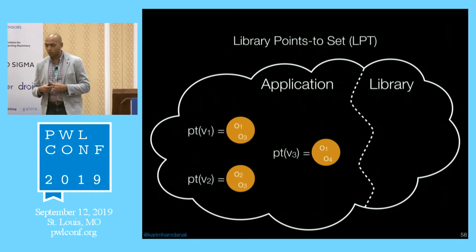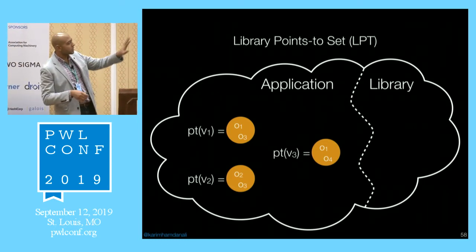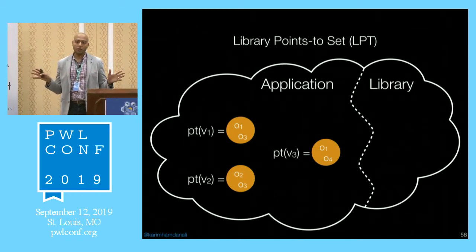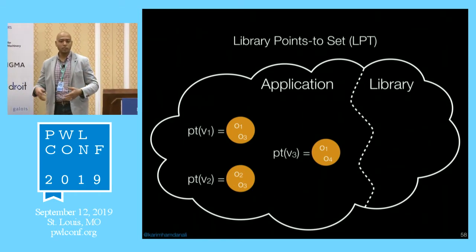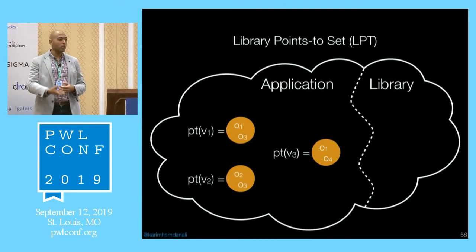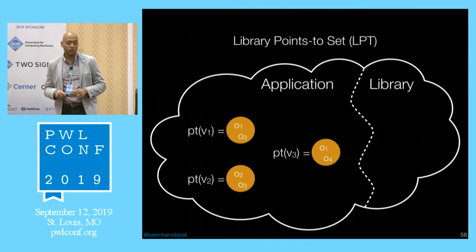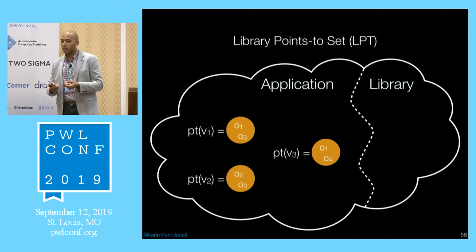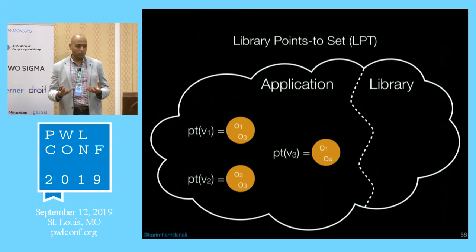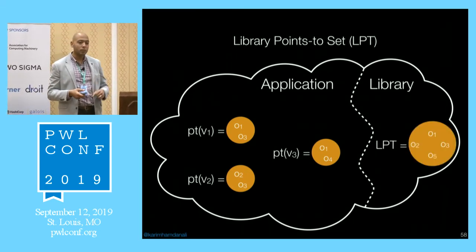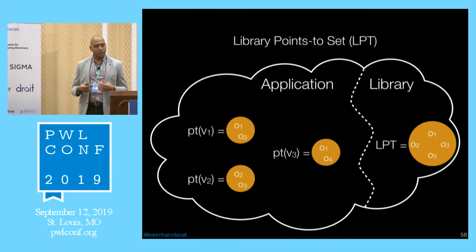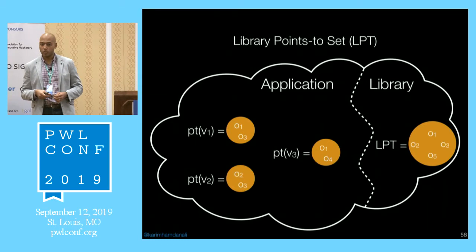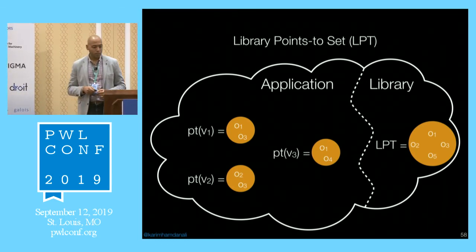I'll highlight two key constraints. First, the library points-to set (LPT) for local variables. The application code stays the same with its variables and points-to sets indicating heap allocations at runtime. In the library, since we're not analyzing any code, we have no local variables. Instead, we have a summary points-to set — the LPT — which you can think of as the union of all local variables in the original library code we're not analyzing. That's a substitution for the original library code.